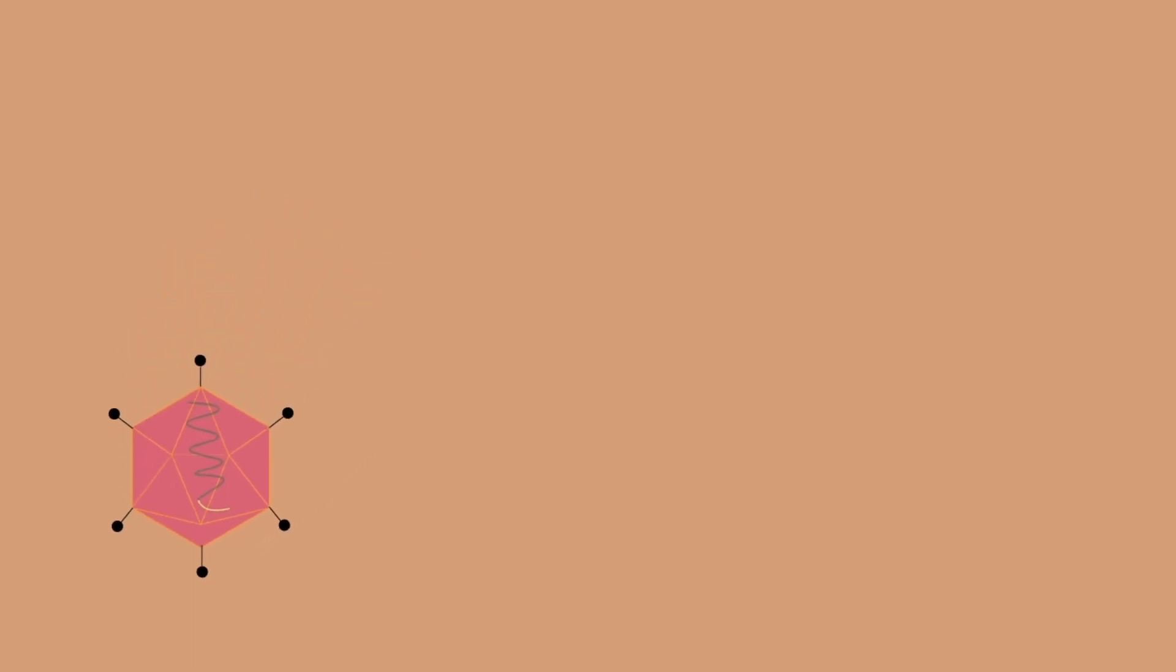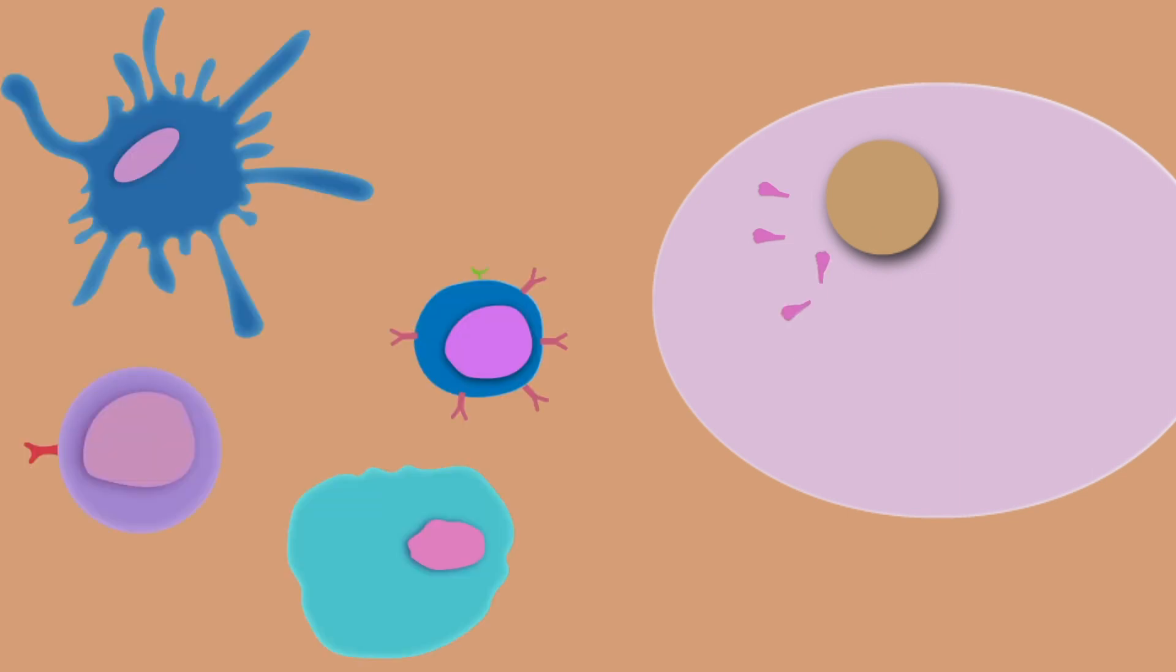some viral vectors cannot replicate, while others can, but they are weak. After the administration, the viral vector enters the cells and produces the proteins derived from SARS-CoV-2, and these actions stimulate immune response against SARS-CoV-2 proteins.